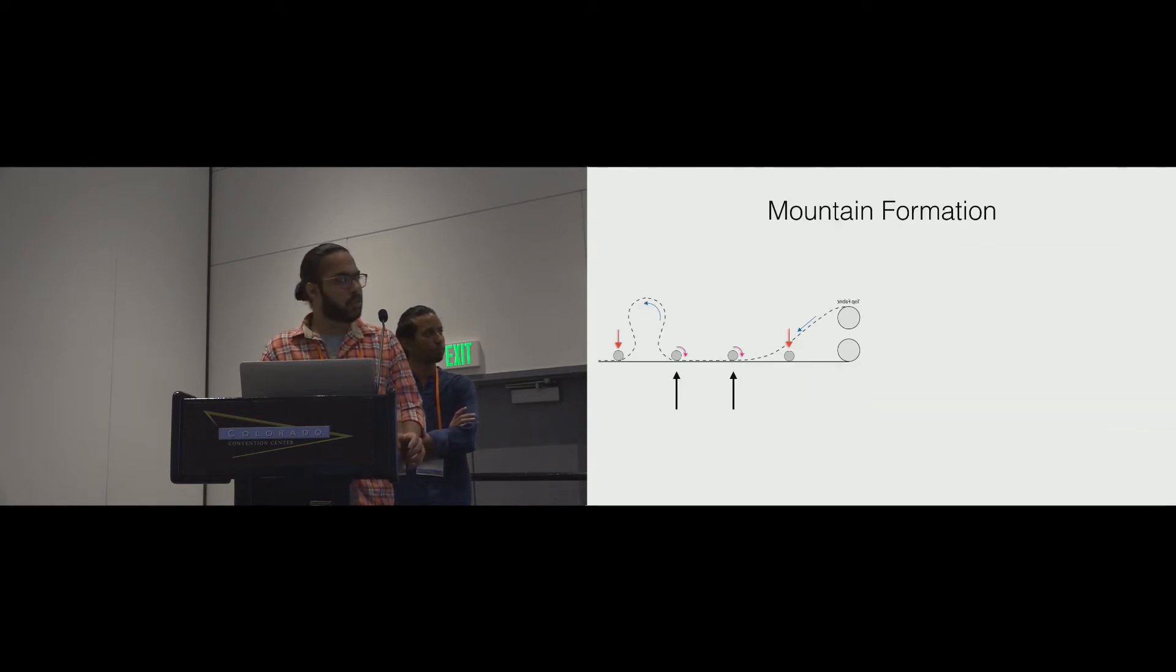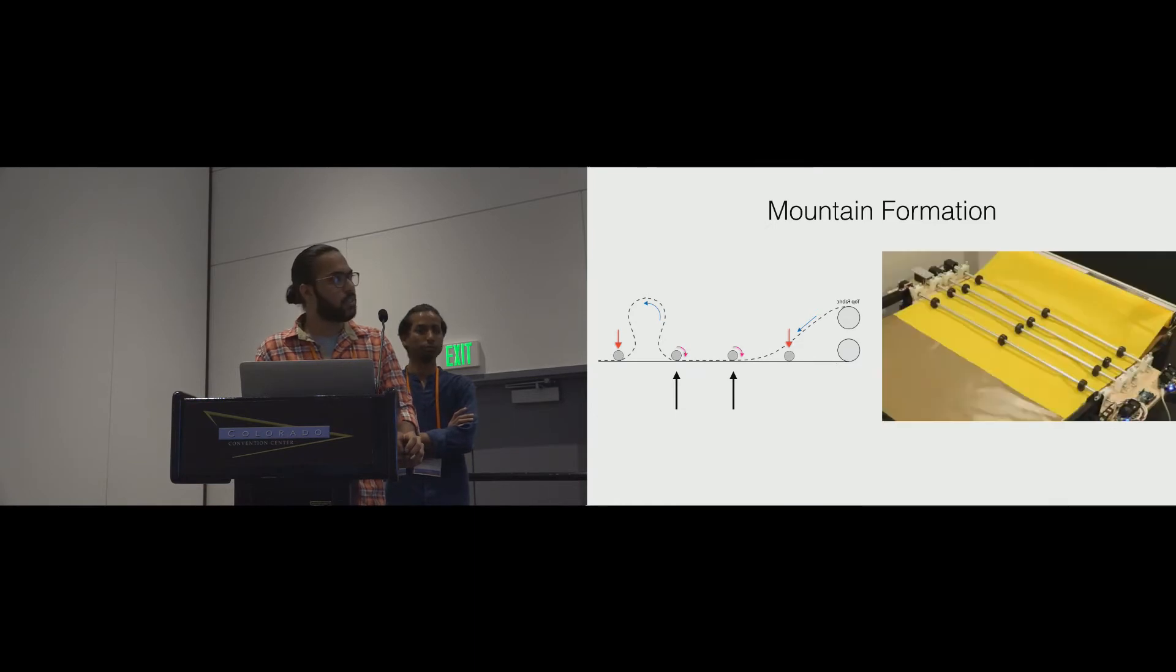Two of these rollers push the fabric forward, resulting in bunching of fabric at one end, and that's how we actually make a mountain actuator. And this is how the machine actually does it.